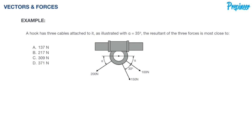Now a hook has three cables attached to it as illustrated with alpha equal to 35 degrees. The resultant of these three forces is most close to what? So we got three or four options there.